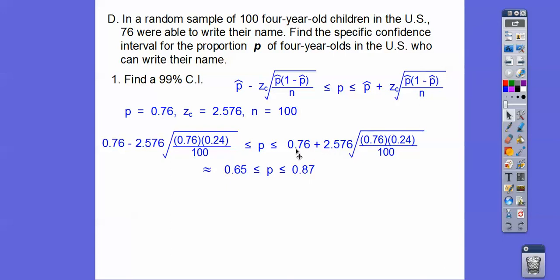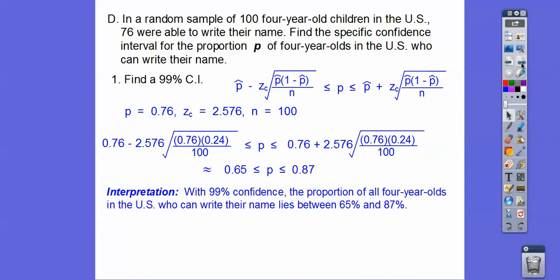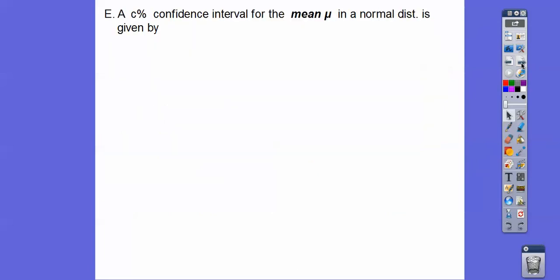This is about 0.11. Crank that out, and you get that right there. Always interpret that. With 99% confidence, the proportion of all 4-year-olds in the U.S. who can write their names lies between 65% and 87%.